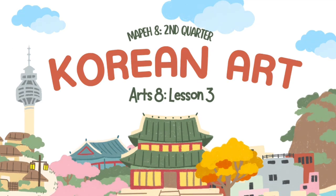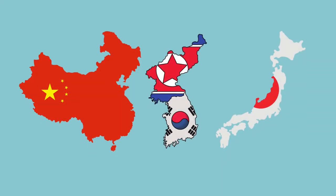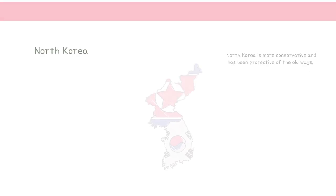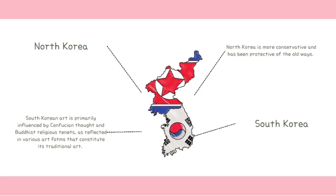The Korean Peninsula is found between two other East Asian countries, China and Japan. Korea shares a historical past with these two, and the country has been very pivotal in the affairs of the region. Although there is a continuous exchange of cultural and technical know-how among these three countries, Korea has been keen on retaining its identity. The peninsula broke into two separate countries, North Korea and South Korea, each having a distinctive form of art and culture.